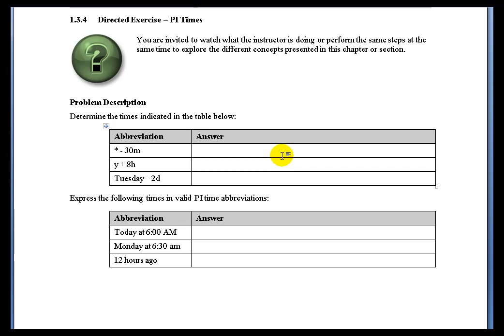The first one is asterisk minus 30 minutes. That means 30 minutes ago — basically 30 minutes before the current time. The current time is represented using the asterisk.